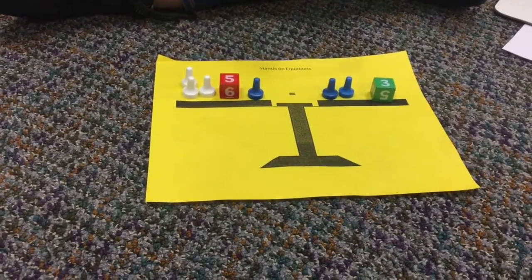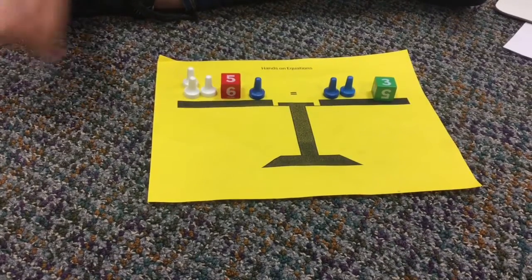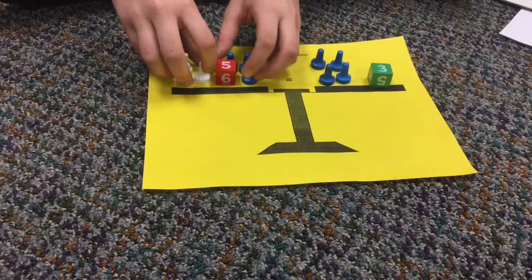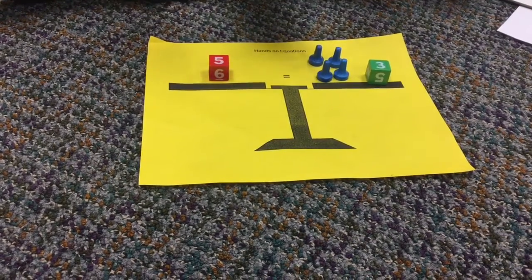And our first legal move we can do, we are going to add 2 blue pawns to each side. This will cancel all these out, because these are 3 pairs of 0.